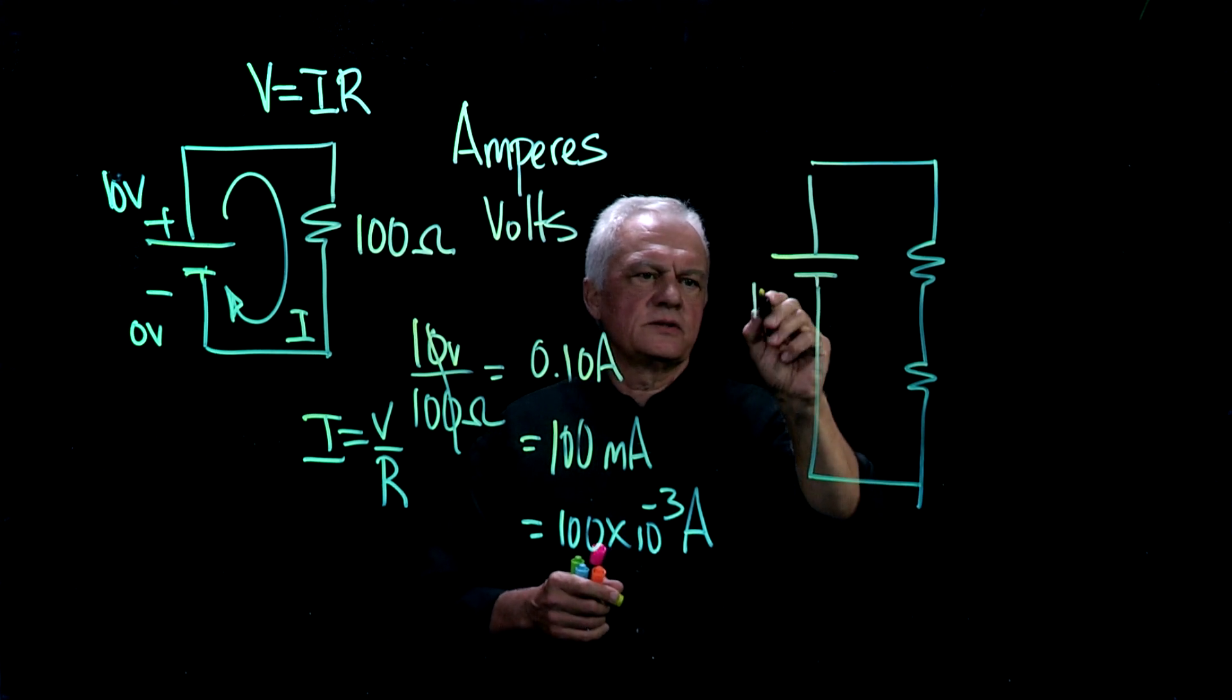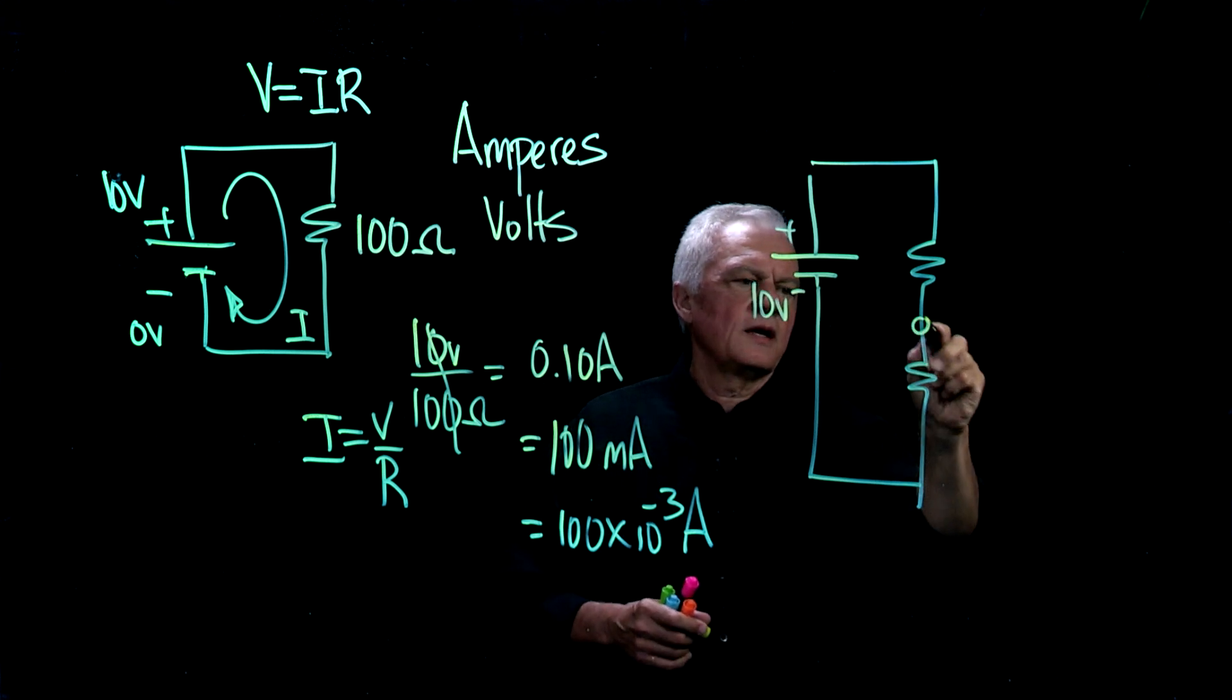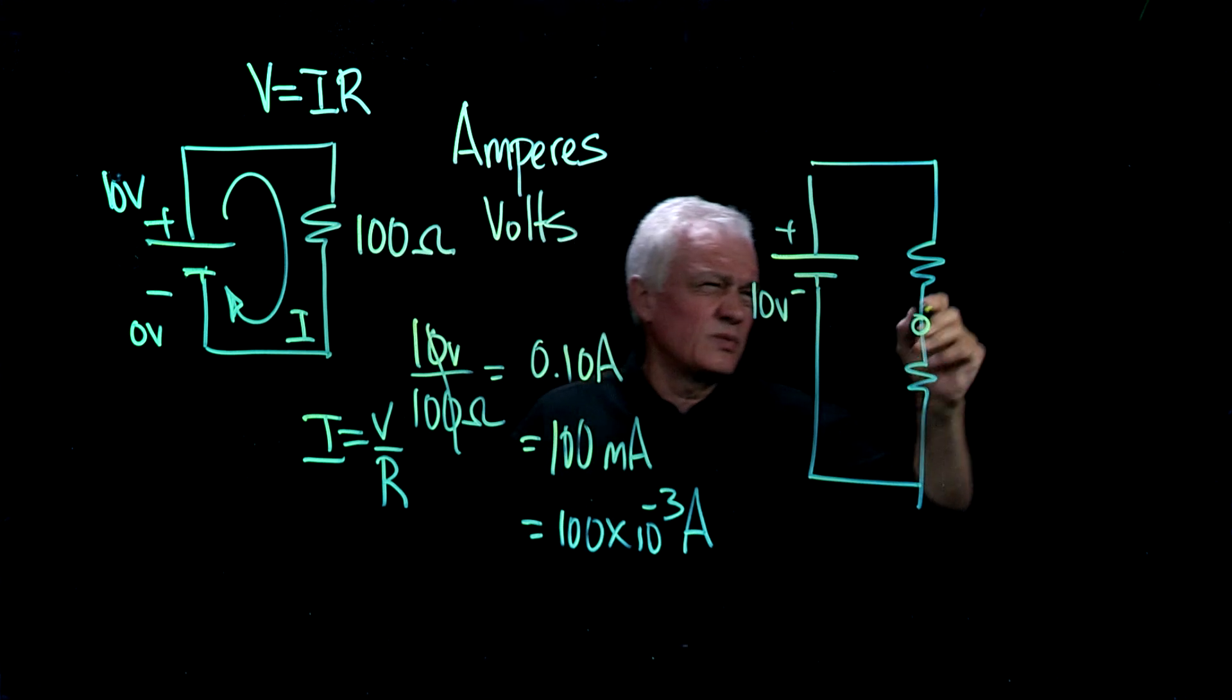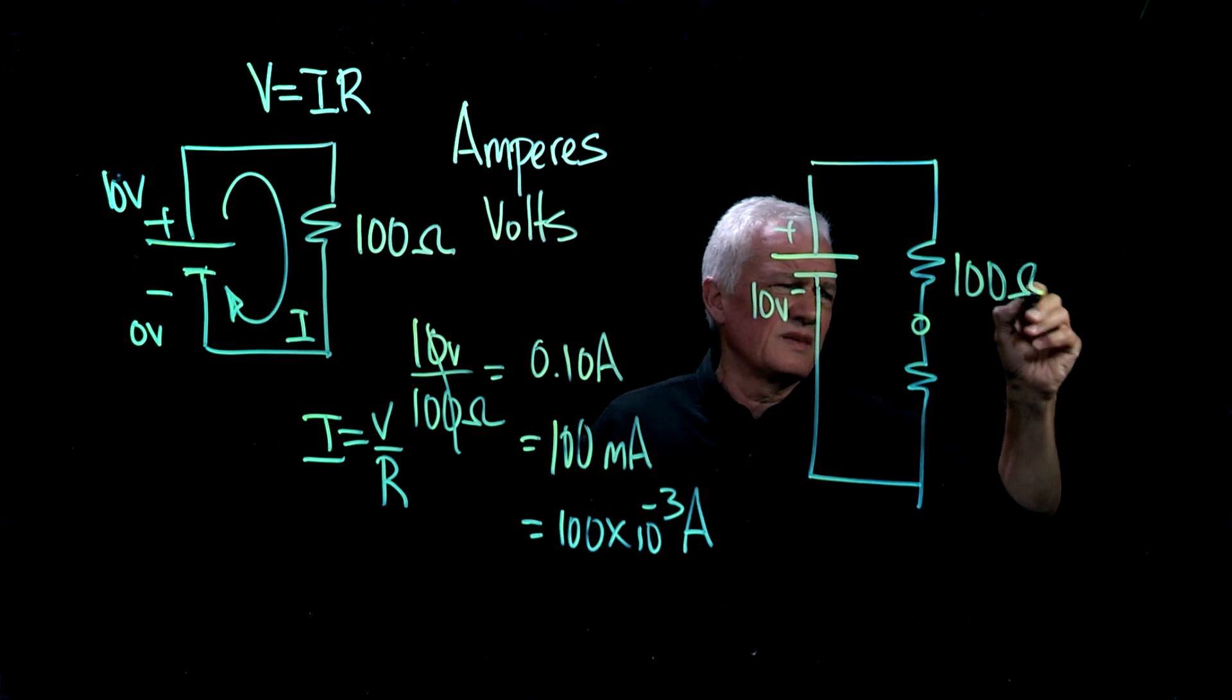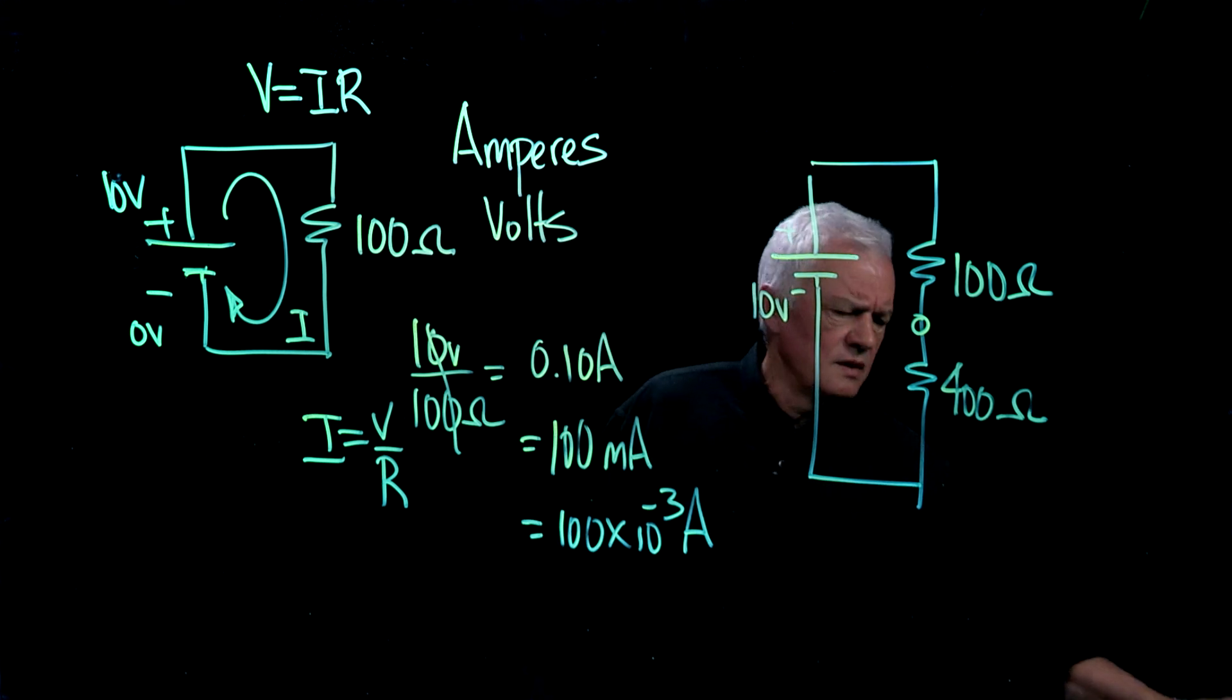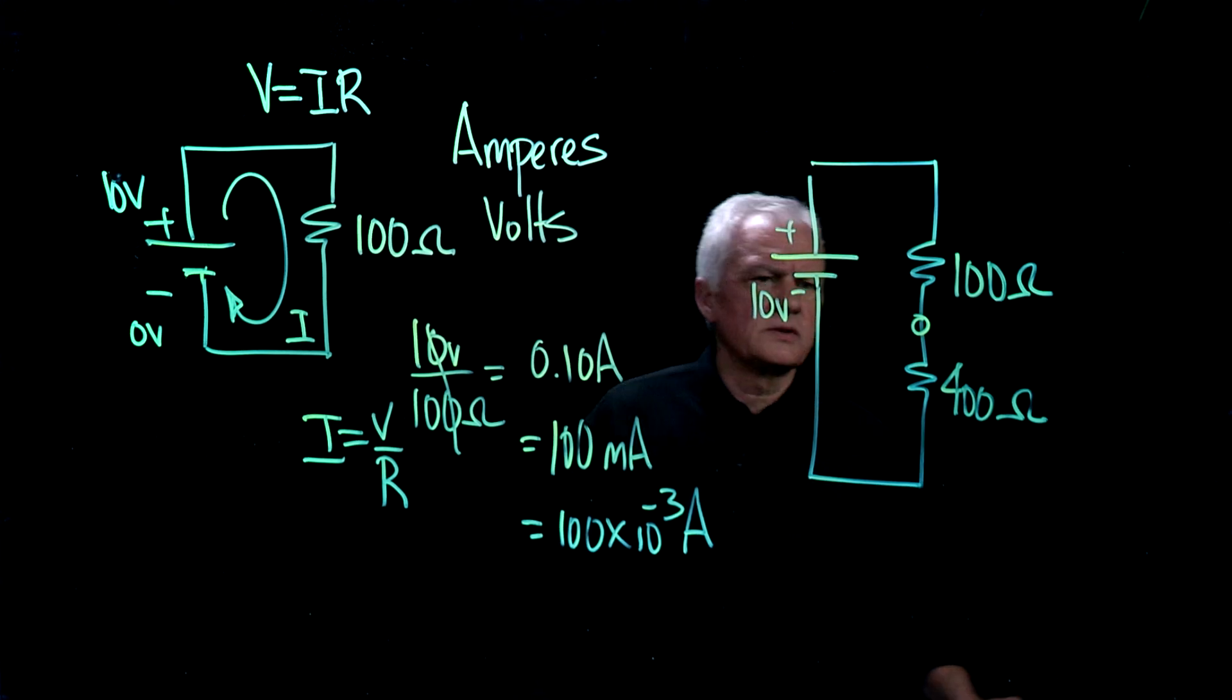Now, in this one here, let's use the 10 volts again. This is the plus side, this is the high side. And let's use, we can use the same thing. We can do 100 ohms, let's leave it there. And here we'll put 400 ohms. And let's just do some understanding of what's going on in the circuit.